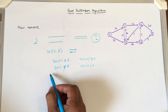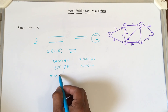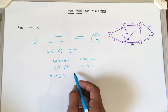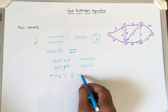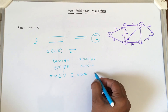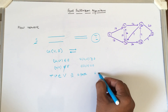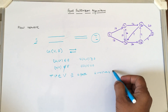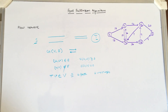One more assumption: for every vertex v in set V, there exists at least one path on which that vertex v occurs. So every vertex in the graph must appear in some path from source to destination. These are the two assumptions for defining a flow network.